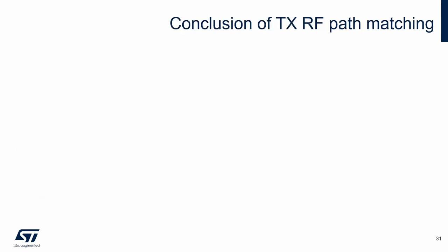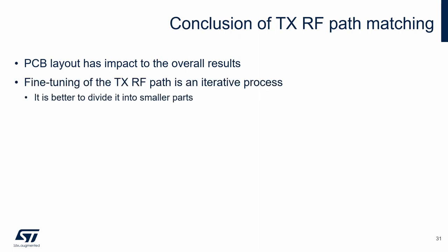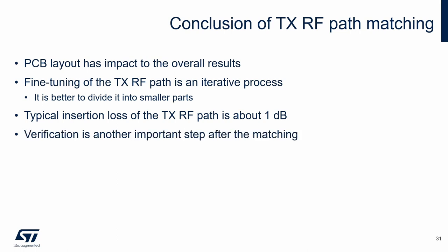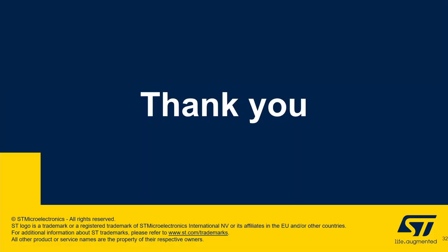Brief conclusion of the transmitter RF path matching: the PCB layout has an impact on the overall results; fine-tuning of the transmitter RF path is an iterative process and it is better to divide it into smaller parts; typical insertion loss of the transmitter RF path is about 1 dB; and verification is another important step after matching. Thank you for your attention!